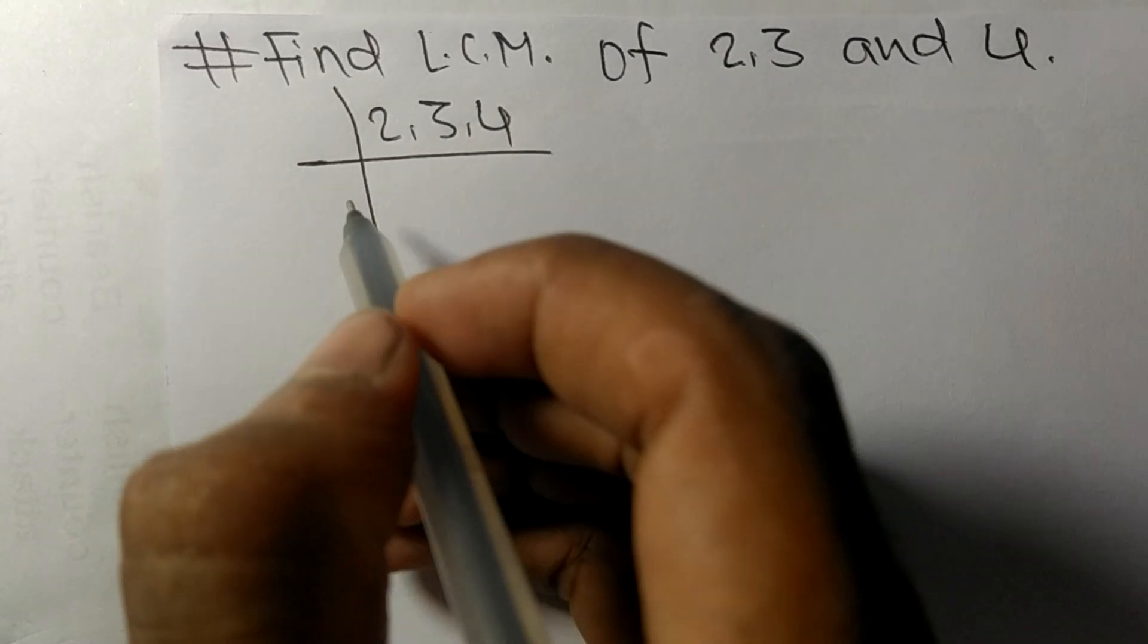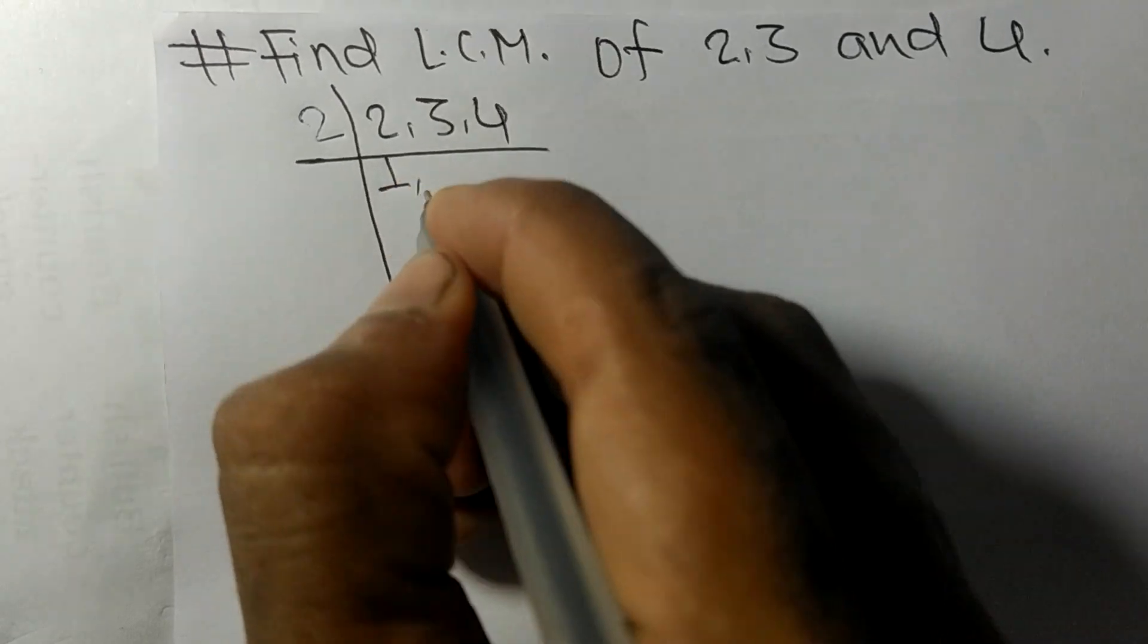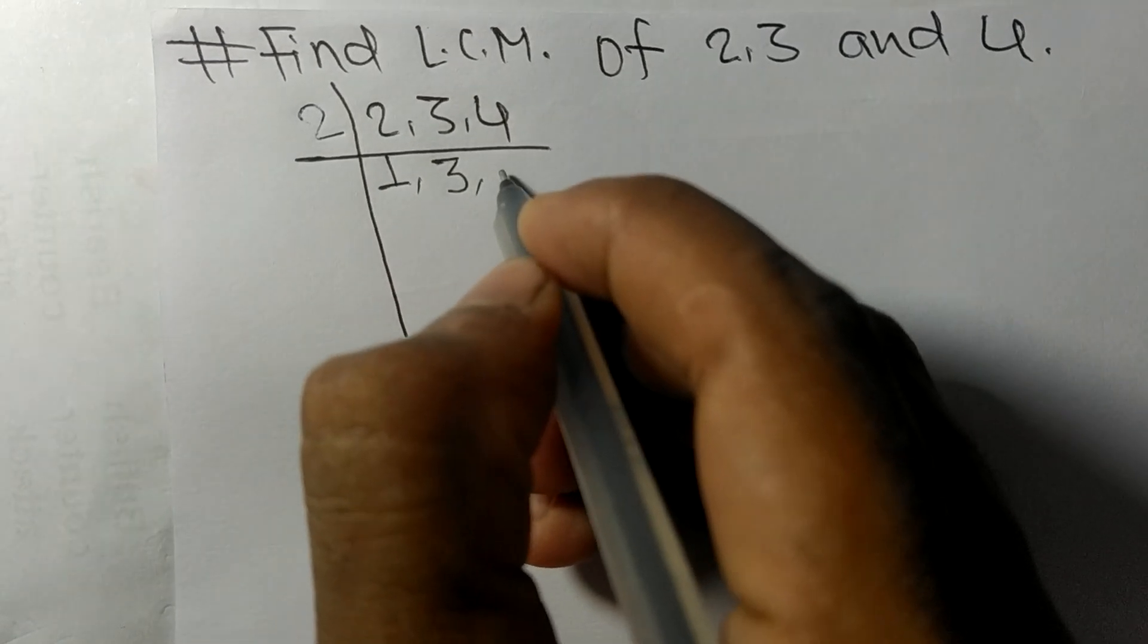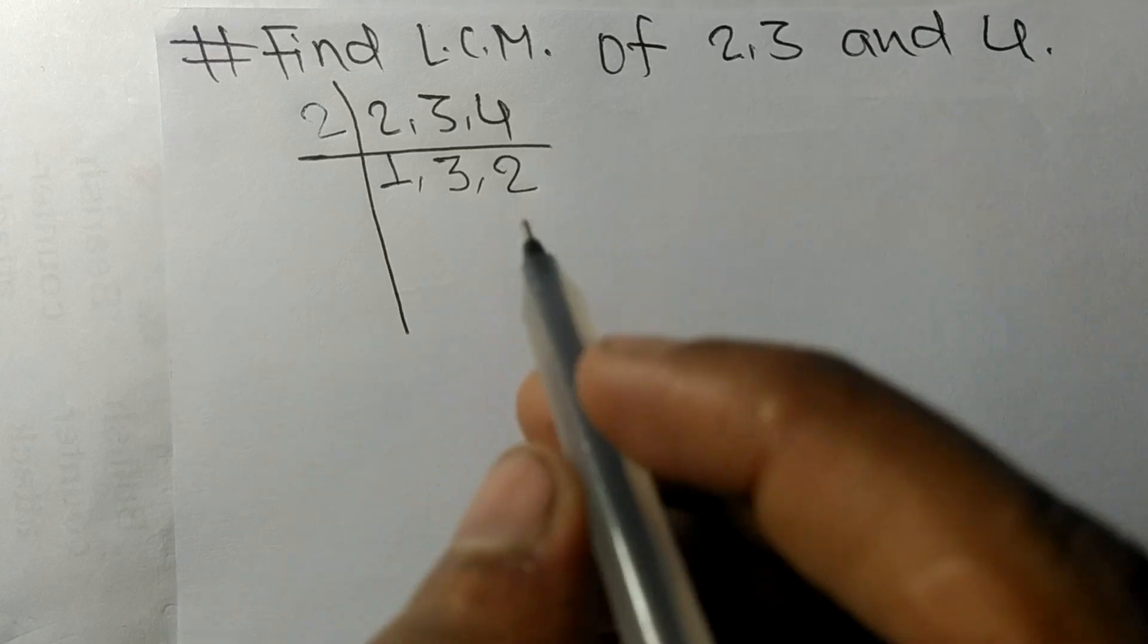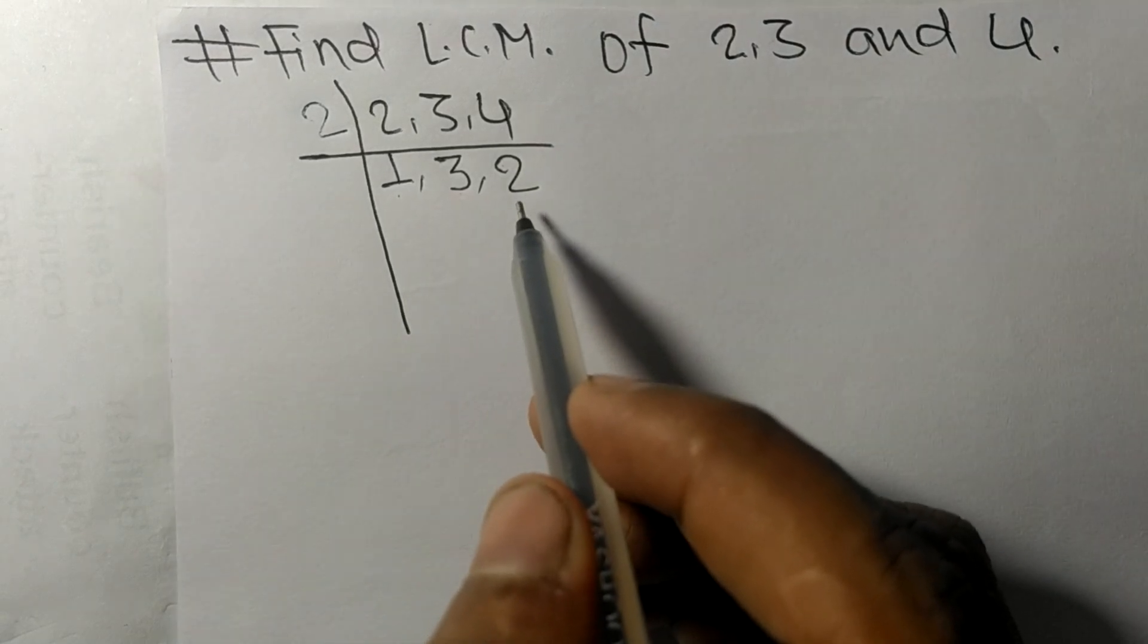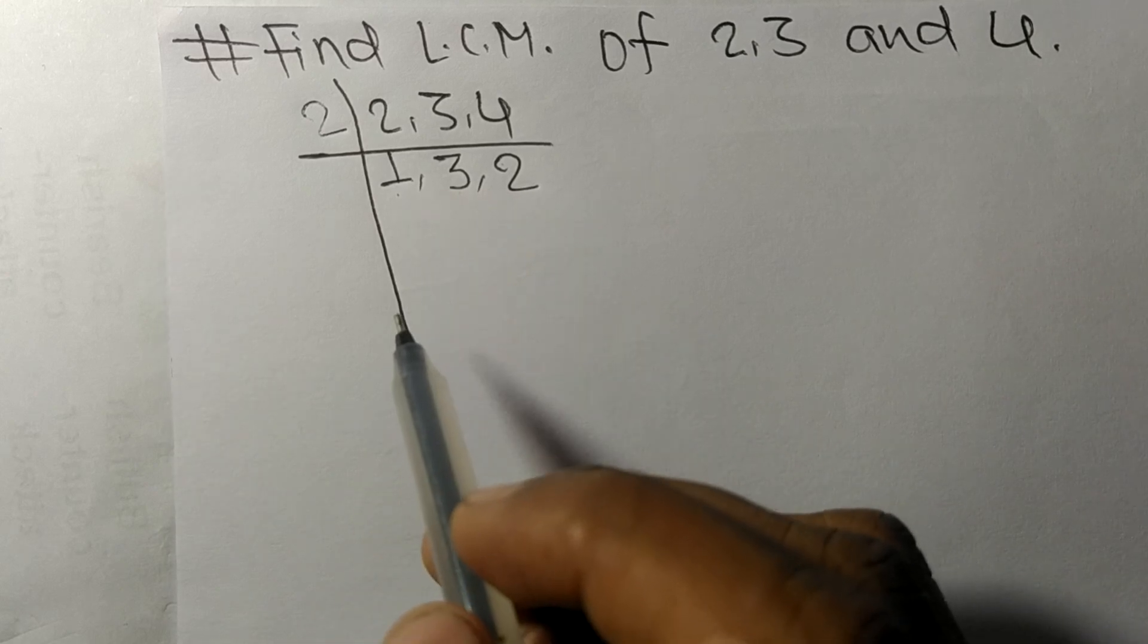2 and 4 are exactly divisible by 2. 2 times 1 means 2, 3 is not divisible so as it is, 2 times 2 means 4. Now we got 1, 3, and 2. Among them, these numbers are not exactly divisible by the same number.